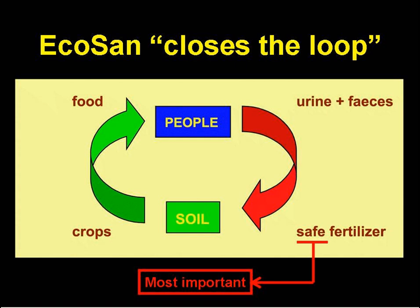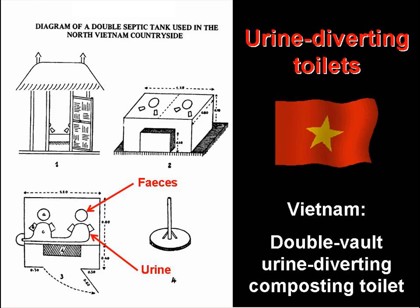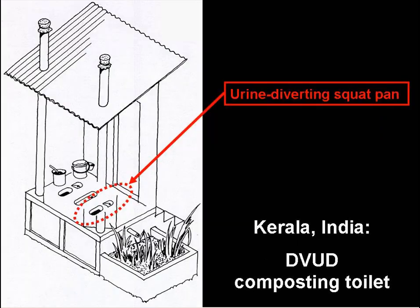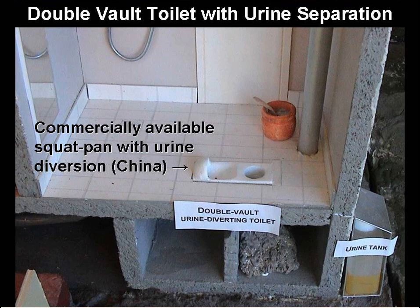It's human excreta made into safe fertilisers, which are applied to the soil to fertilise crops, to produce food for us. This slide shows a double-vault urine-diverting composting toilet, which has been extensively used in the north of Vietnam since the 1950s. The double-vault system is identical in operation to the alternating twin-pit system used with VIP latrines and pour-flush toilets. And this slide shows a similar DVUD toilet from Kerala in India. And this is a model of a DVUD toilet used in China, where a commercially available ceramic urine-diverting squat pan is used.